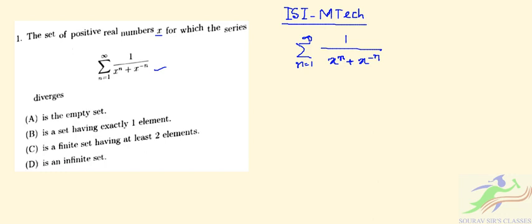Now we know that x^n + x^(-n) is always greater than or equal to x^n for all x > 0.